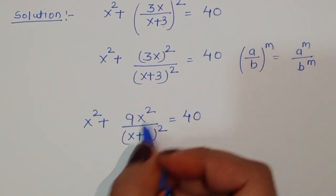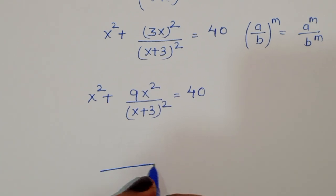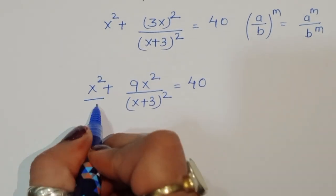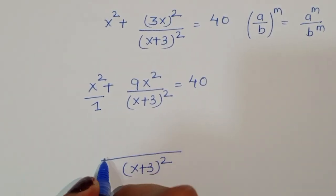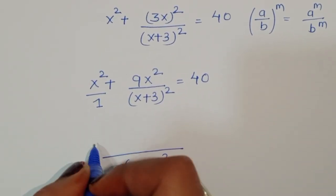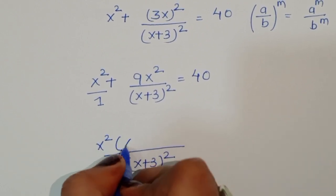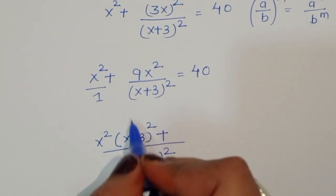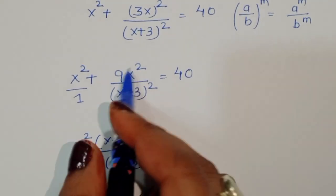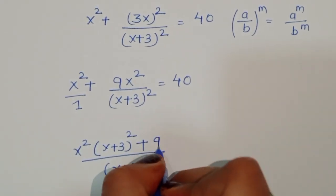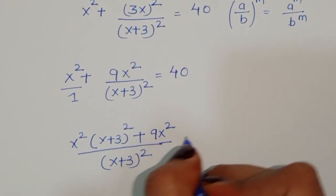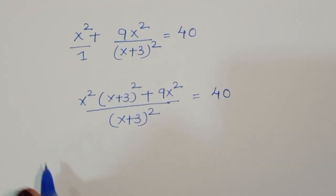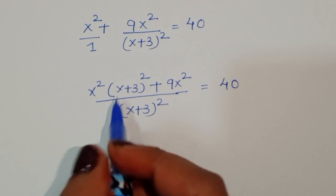Now we take the LCM. Taking LCM with (x+3)² as denominator, we get x² times (x+3)² plus 9x² in the numerator over (x+3)² equal to 40.